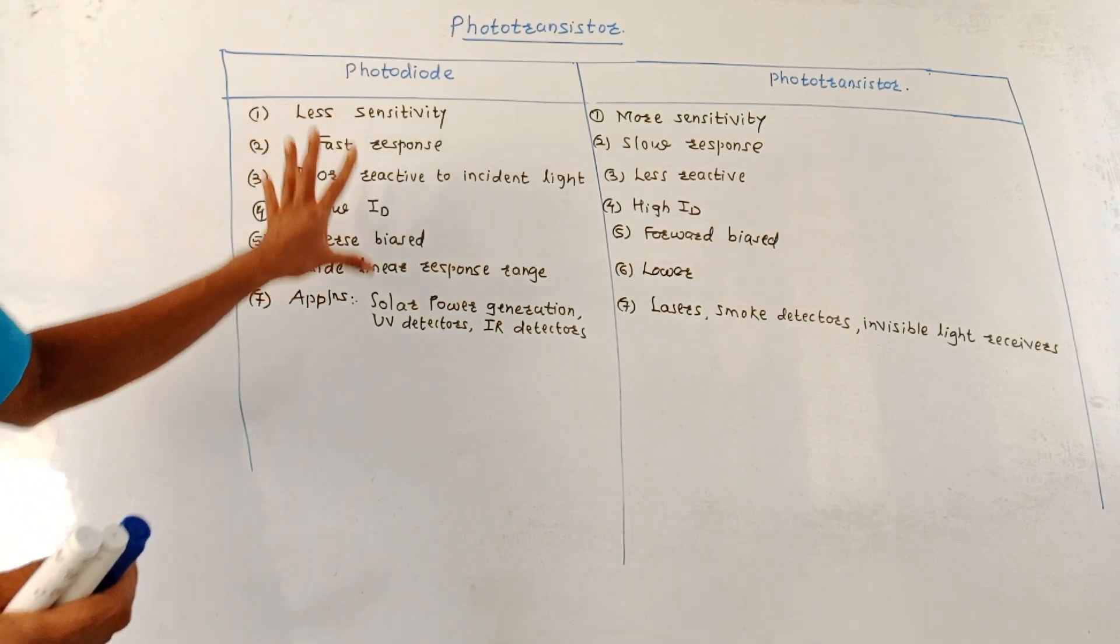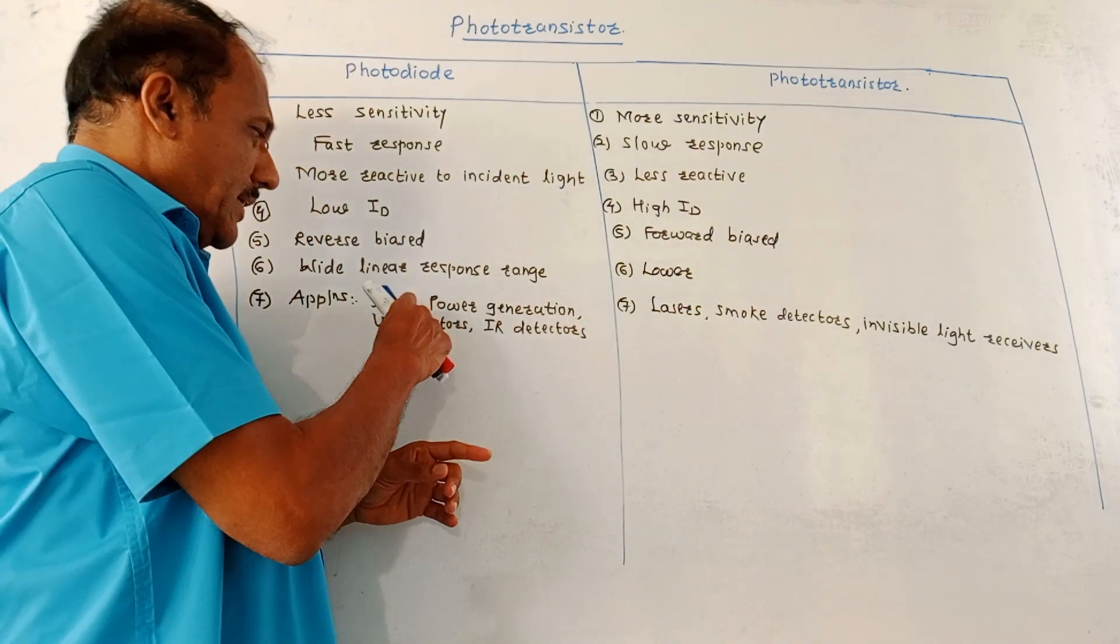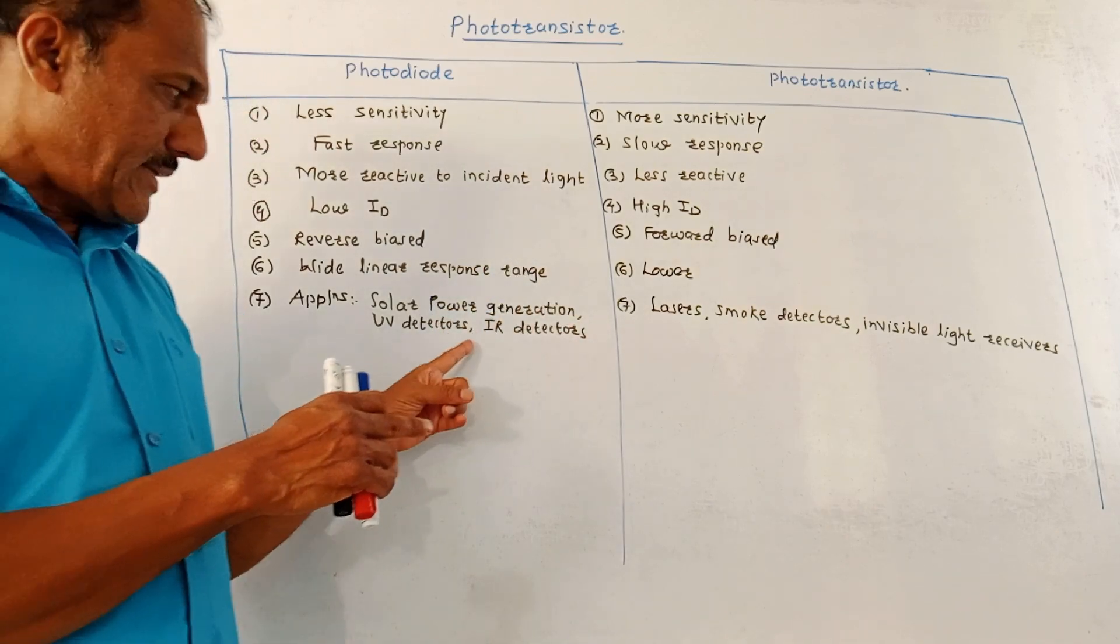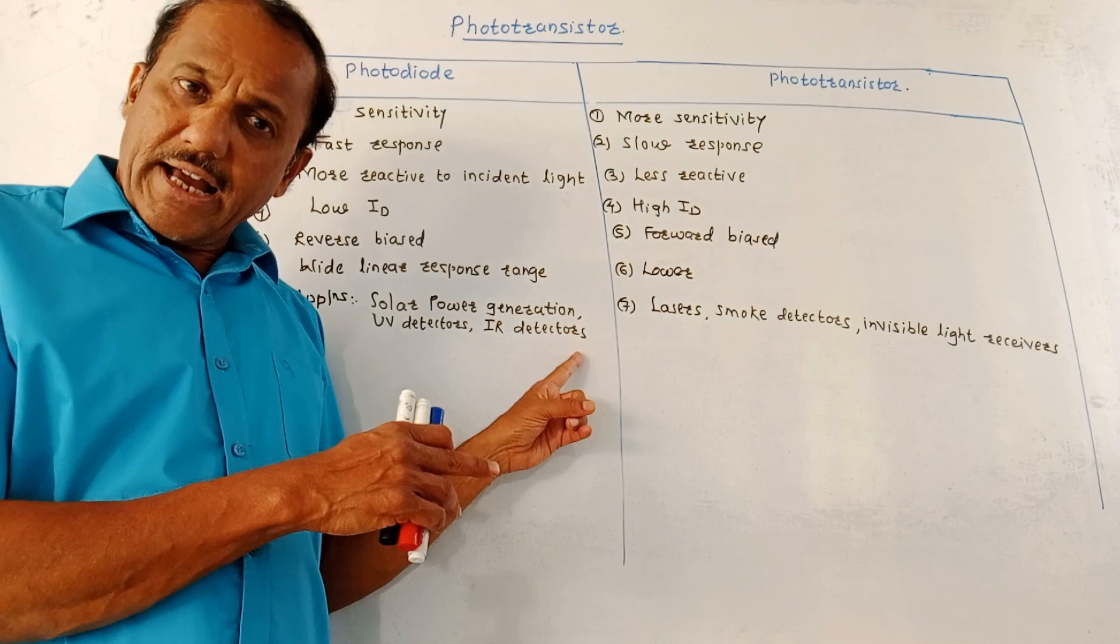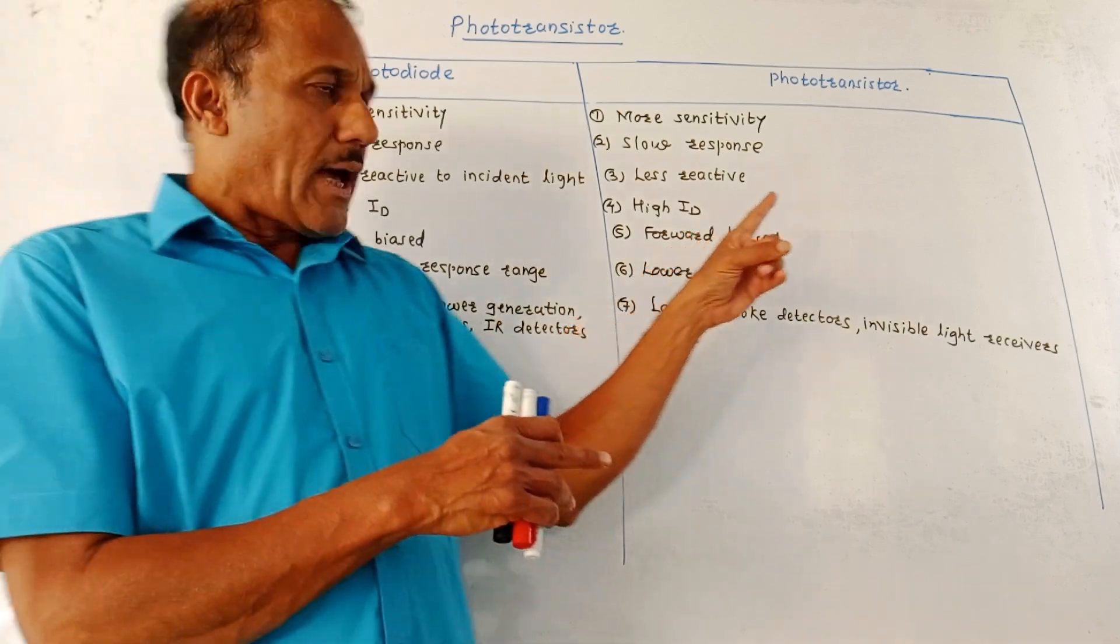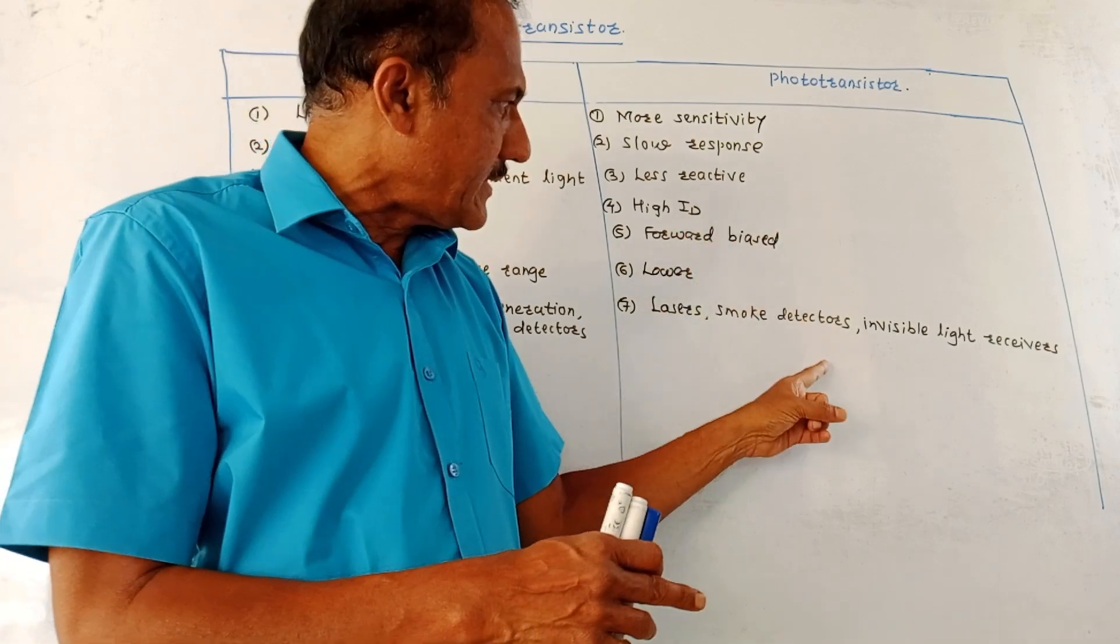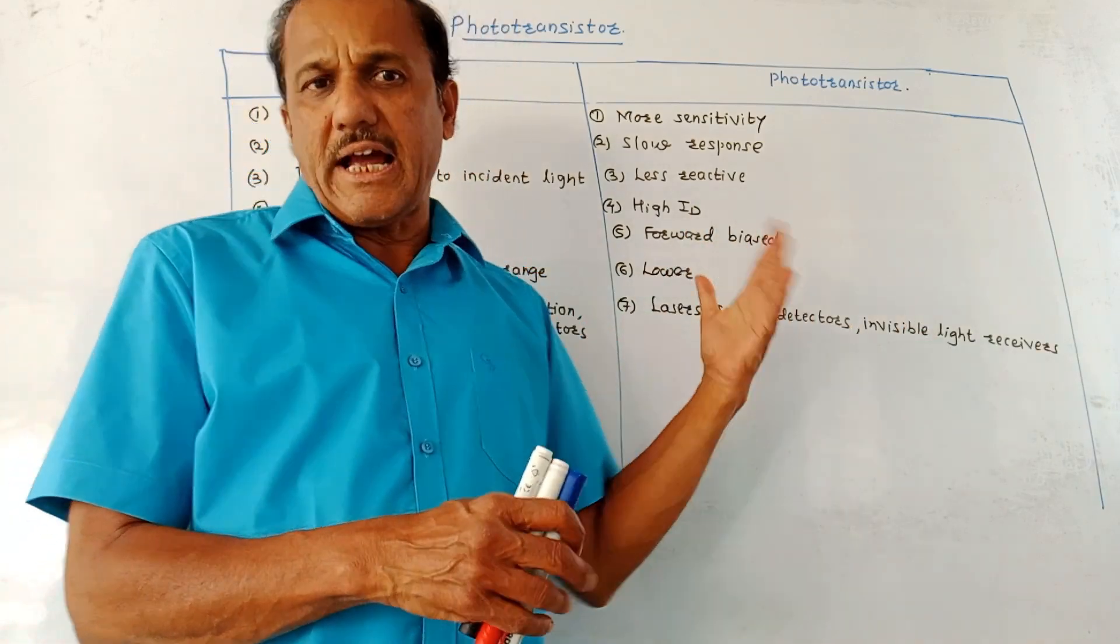Applications of photodiode. These are the typical applications. In case of solar power generations, then UV ultraviolet detectors, then infrared IR detectors and so on. Applications of phototransistors includes lasers, smoke detectors, individual light receivers and so on.